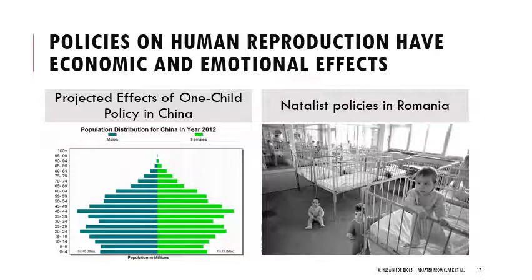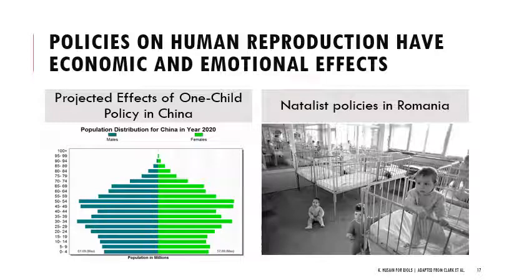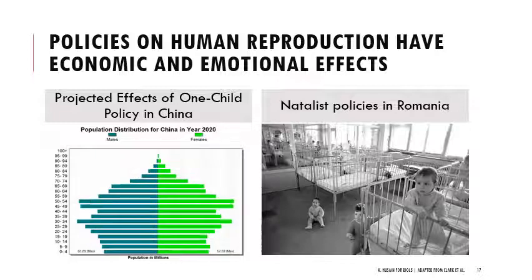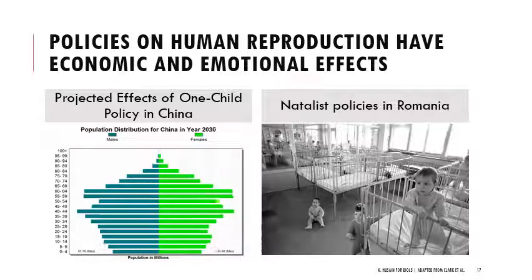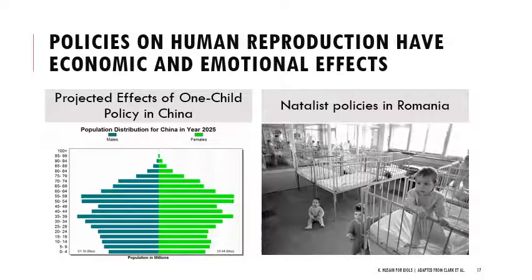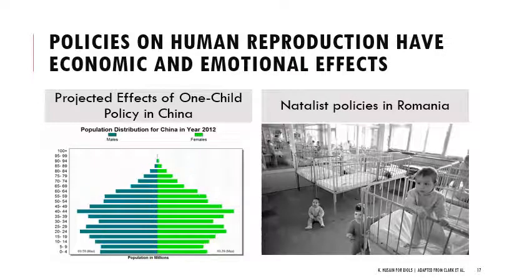When thinking about control of human reproduction, we see really serious economic and emotional effects. The plot on the left shows the age structure after the one-child policy in China. Whenever we control human reproduction, there are serious impacts. With the one-child policy, what emerged was not enough people being born to support the economy or to take care of aging parents. We also see many people given up for adoption and shifts in sex ratios.